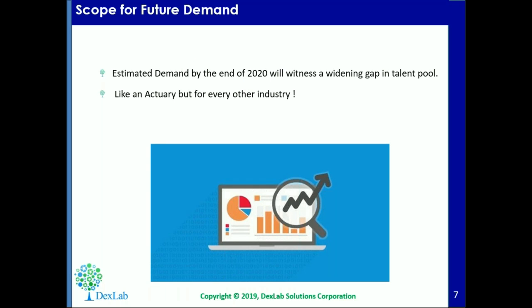It has been estimated that by the end of 2020 there will be a huge gap in the market for talent. Data scientists will do for every different industry what actuaries used to do for the insurance industry. And it is very, very difficult to automate this job, unlike all the other jobs which are at a risk of automation right now.